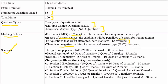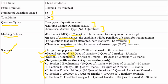The question paper is divided mainly into 3 sections. The first section is General Aptitude, the second is Chemistry, and the third is the subject-specific section. In General Aptitude, 5 questions of 1 mark and 5 questions of 2 marks are asked, totaling 15 marks. For the Chemistry section, there are 5 questions of 1 mark and 10 questions of 2 marks, totaling 25 marks.